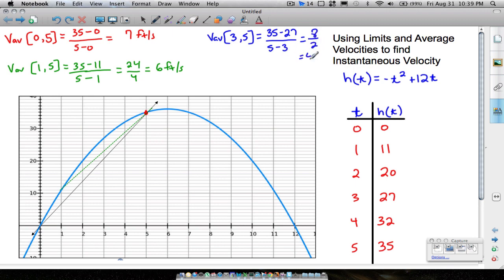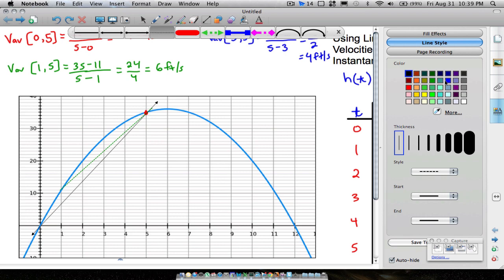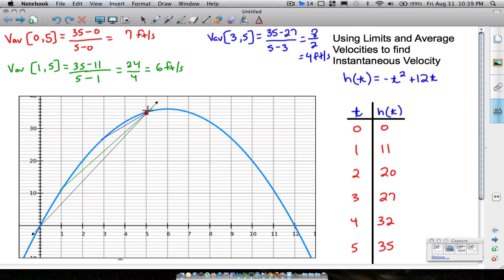And 35 minus 27, that's going to be 8 over 2. This value is 4 feet per second. And again, as we can see, it is slowing down. And I failed to draw that slope for you, but that slope looks something like this. We're at, what do we say? 3 seconds. So at 3 seconds, we're right there.